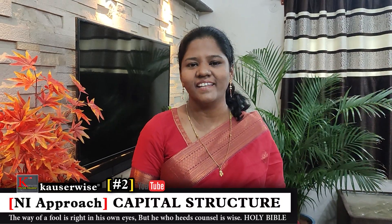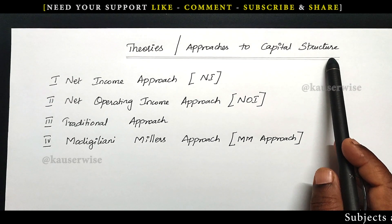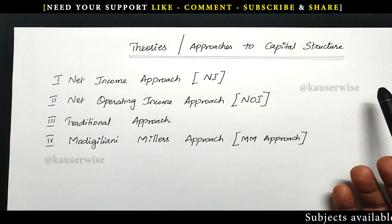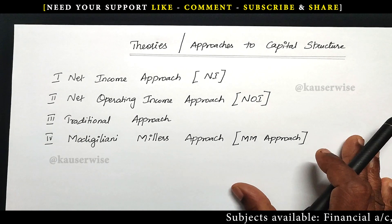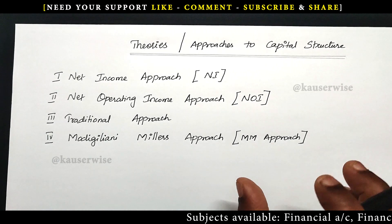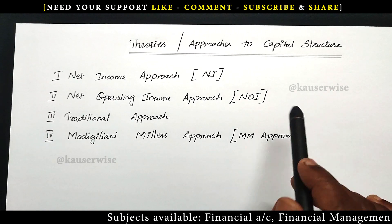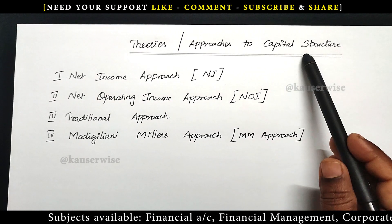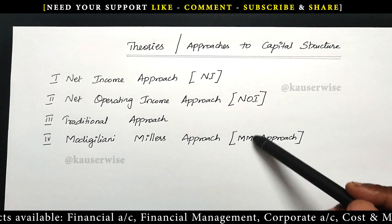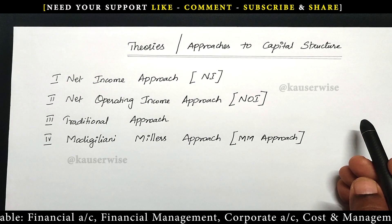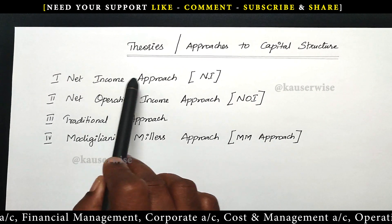Hi, welcome to my channel. This is Kouser Weiss and this is the continuation video of capital structure. In the previous videos we have seen calculation of EPS — that is earnings per share — under EBIT analysis and computation of indifference point. Now in this series of videos we are going to see four different approaches to capital structure. Now let us see the first one, that is the net income approach.